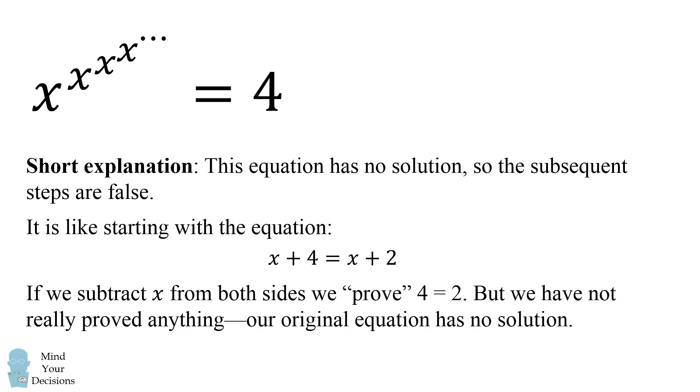But we have not really proved anything. Our original equation has no solution. And similarly, this original equation, where we set this infinite tower of exponentials equal to 4, this has no solution. So, anything that we deduce from that will not be true.